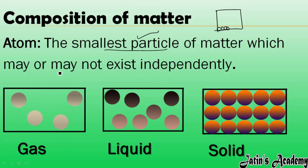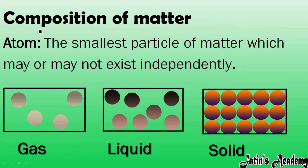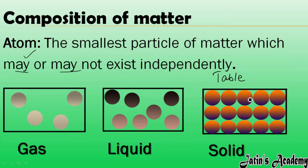Those smallest particles of matter may or may not exist independently. The smallest particle present in matter is known as the atom. In some cases, atoms can exist independently — moving freely — but in other states of matter, atoms are not free. For example, in solids like a table, particles are very closely attracted to each other, so they are not existing independently. So the smallest particle of matter is the atom, and the atom may or may not exist independently.